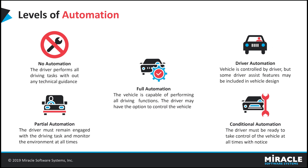In partial automation, the driver is engaged with the driving task and monitors the environment at all times. It is for driver assistance systems that provide both steering and acceleration and braking control, but only under limited conditions. It is not a self-driving car, even though it may seem like the vehicle is driving itself. In this level, the driver continues to remain in control of the car and must always pay attention to traffic.